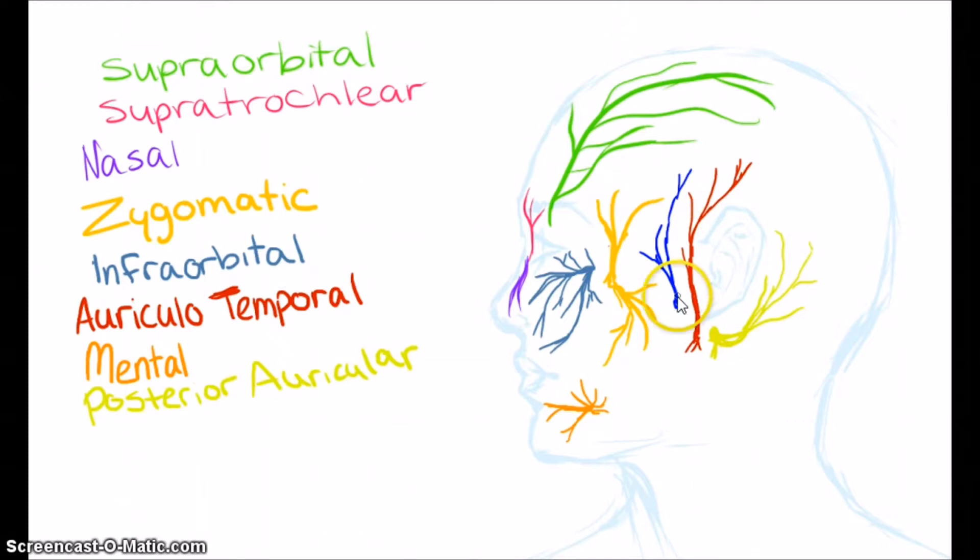The temporal affects the muscles in the temple, side of the forehead, eyebrow, eyelid, and upper cheek.